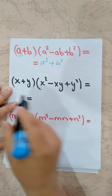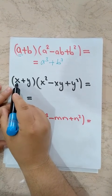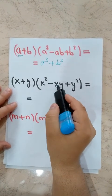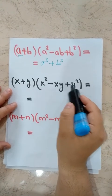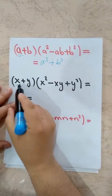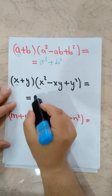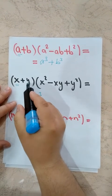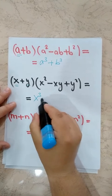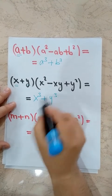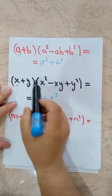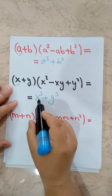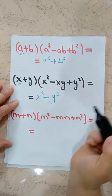Next example: using the same pattern — first term plus second term, times first term squared minus first term times second term plus second term squared — our first term is X and second term is Y. So the factors of X plus Y times X squared minus XY plus Y squared equal X cubed plus Y cubed.